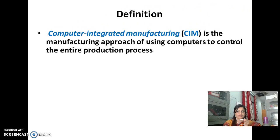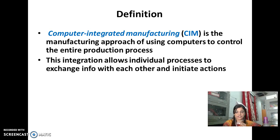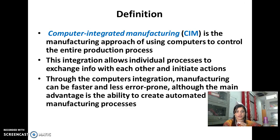The definition of CIM is the manufacturing operation using computers to control the entire production process. This integration allows individual processes to exchange information with each other and initiate action. Through computer integration, manufacturing can be faster.